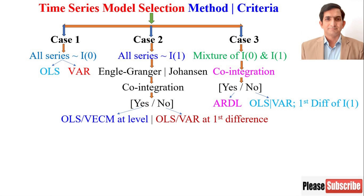Case three: if you have a mixture of I(0) and I(1), then go for the autoregressive distributed lag model, ARDL. You have to check cointegration — if a cointegrating equation exists, estimate ARDL. If there is no cointegration, then estimate OLS or VAR, but you should take the first difference of all those time series that are not stationary at level. Here I have explained three scenarios of selecting a time series model.